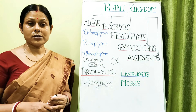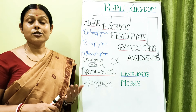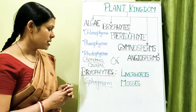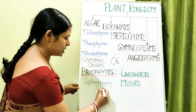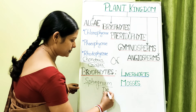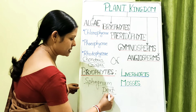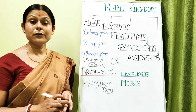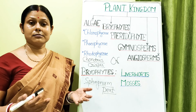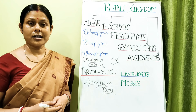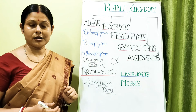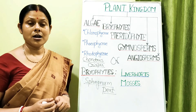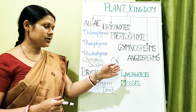When Sphagnum from primitive eras underwent fossilization, it resulted in the formation of a fuel called peat. Peat is a fossil fuel obtained from Sphagnum that can be burnt like coal — this is another good example of the economic importance of bryophytes.